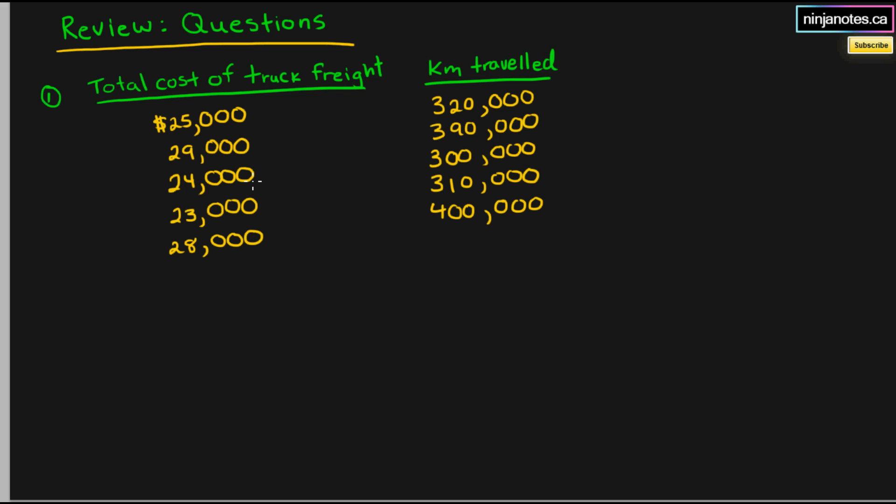Now, cost is going to be your dependent while kilometers traveled is going to be your independent because there is no cost without an amount actually traveled. So this is going to be your x values, these are your y values when you're going to calculate slope.